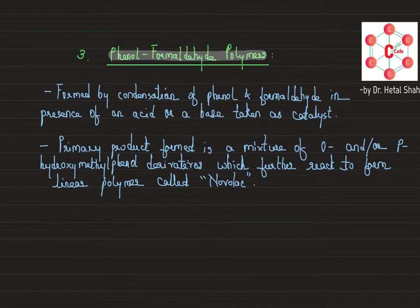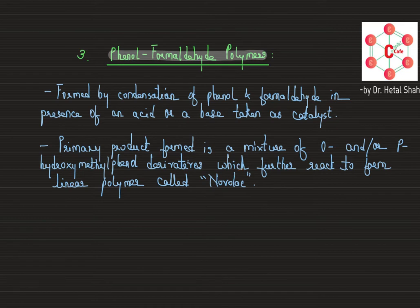The primary product first formed is a mixture of ortho and/or para hydroxymethyl phenol. You can have a mixture of ortho and para hydroxymethyl phenol, or hydroxymethyl groups in both ortho and para positions together. This derivative is further polymerized to generate linear chains of polymer, generally called Novolac.